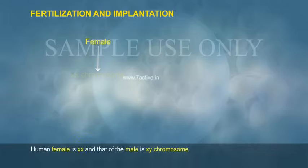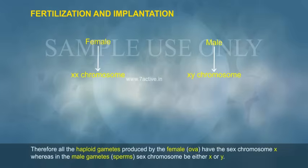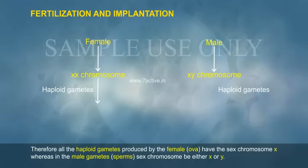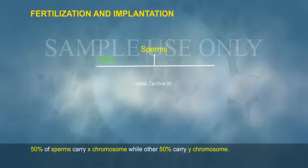The human female is XX and that of the male is XY chromosome. Therefore all the haploid gametes produced by the female — ova — have the sex chromosome X, whereas in the male gametes, the sperm's sex chromosome can be either X or Y. Fifty percent of sperm carry X chromosomes while the other fifty percent carry Y chromosomes.